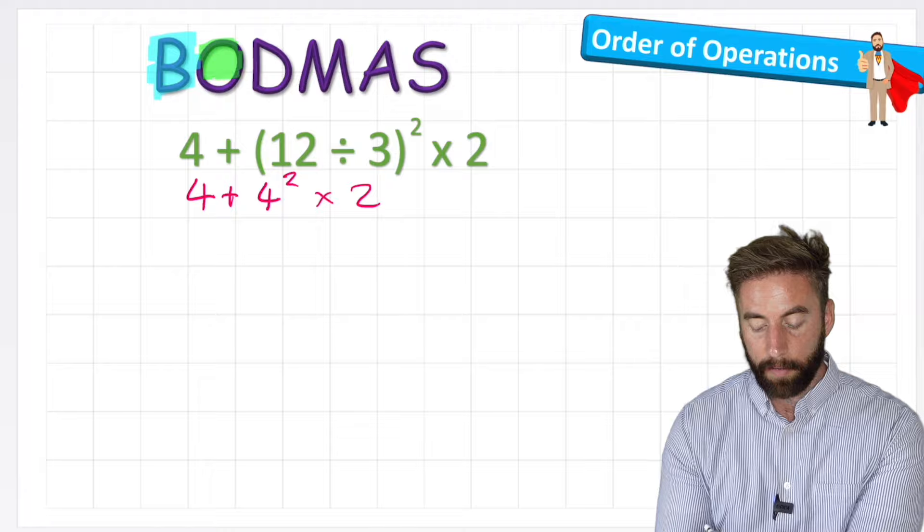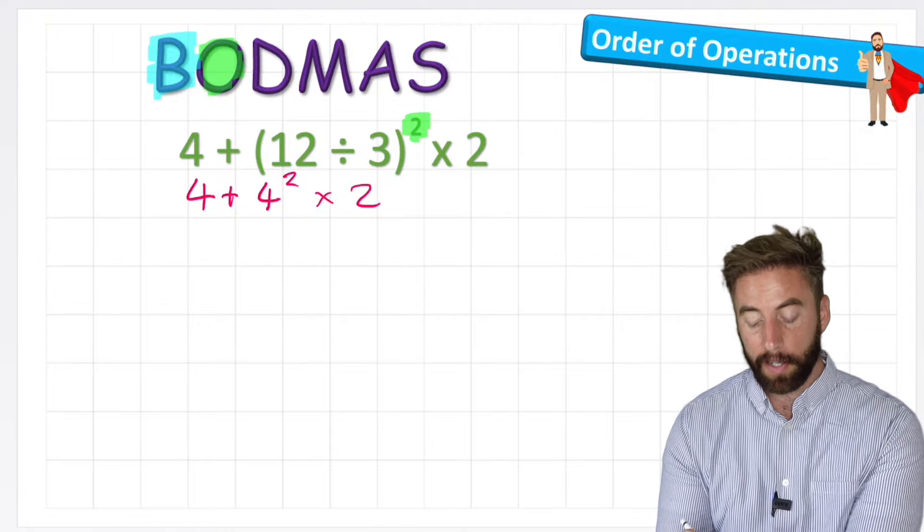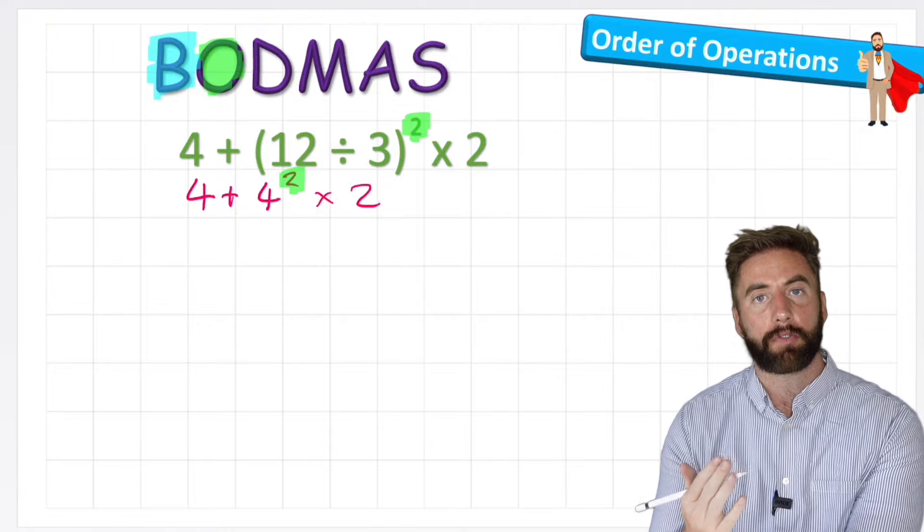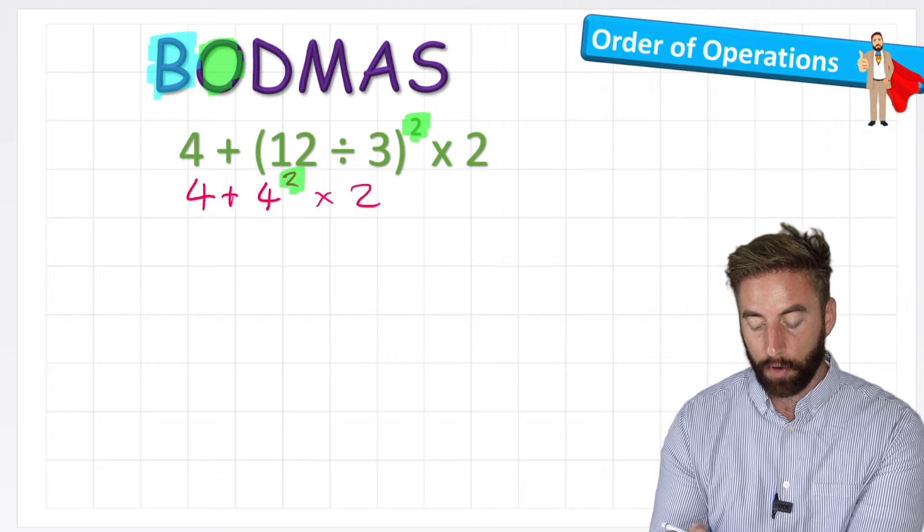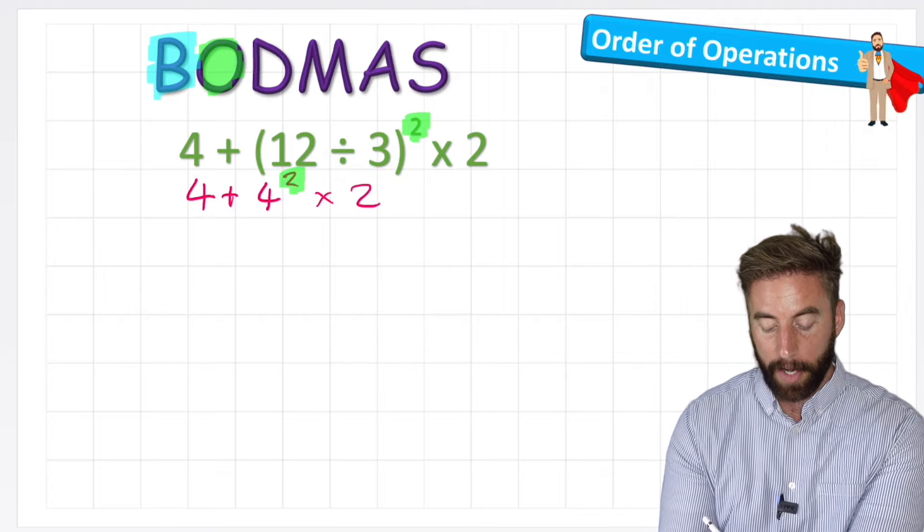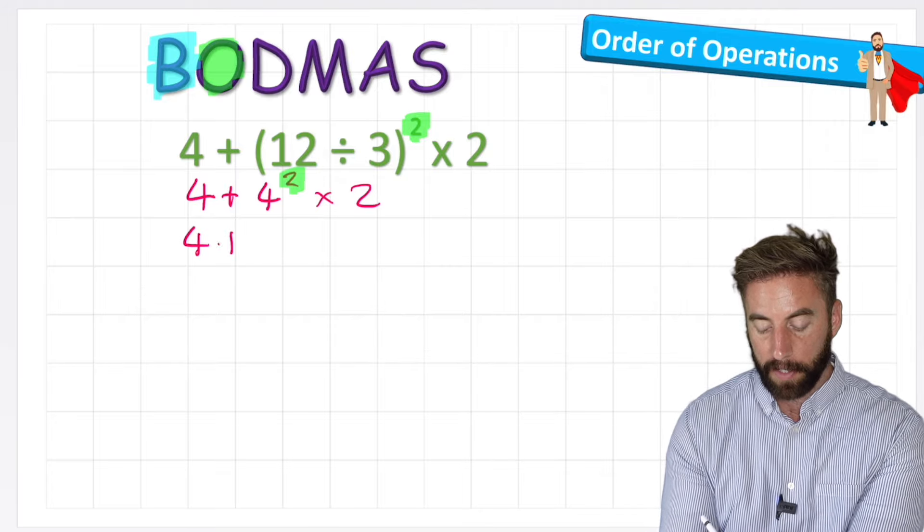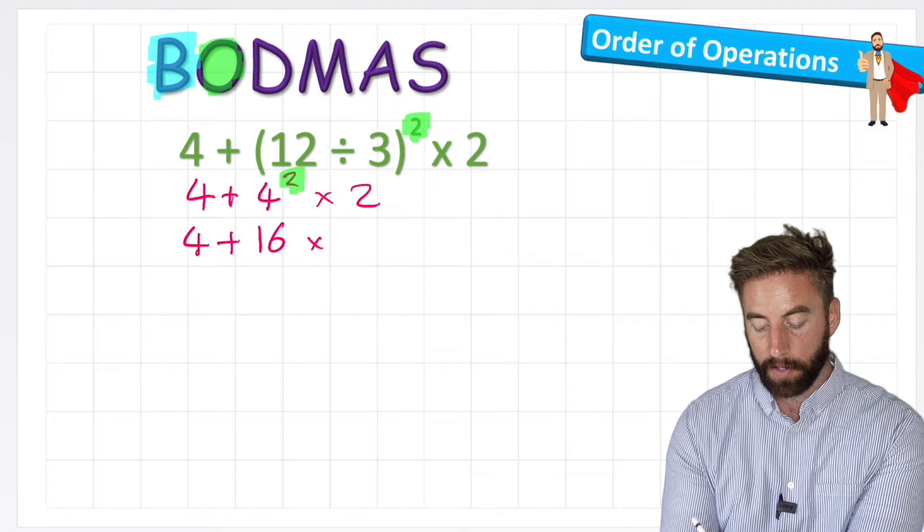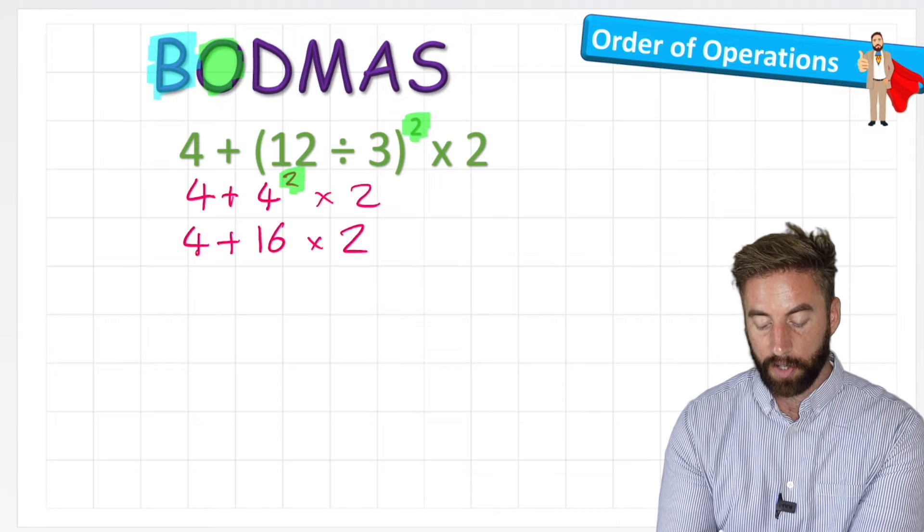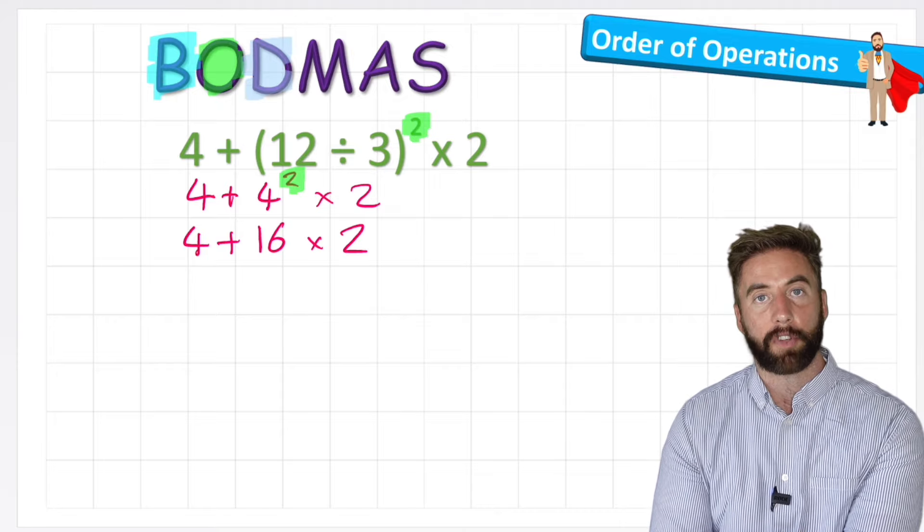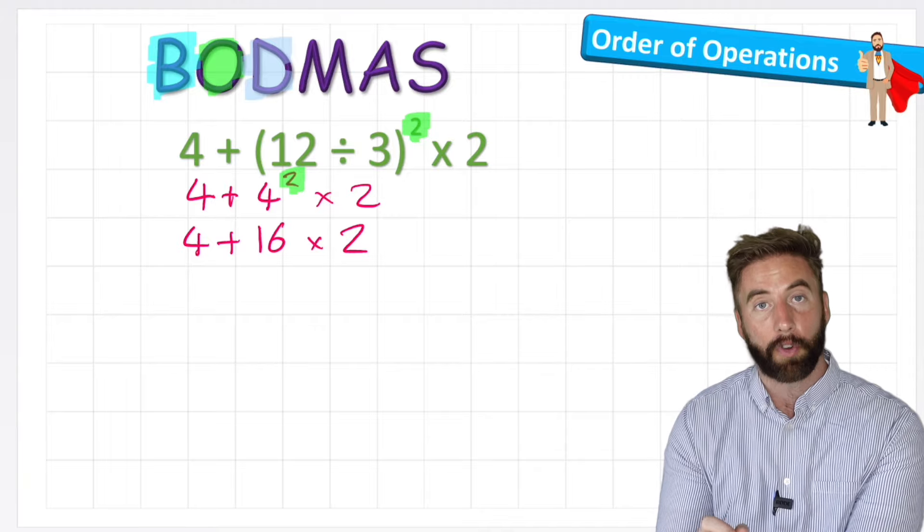The next thing to do is the order, which in this case is this power of 2 here. So 4 to the power of 2 is just 4 multiplied by itself. So 4 times 4, and 4 times 4 is 16. So my next row would read 4 plus 16 times 2. My next one says division, and we actually don't have any more division in this question left.